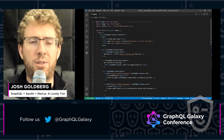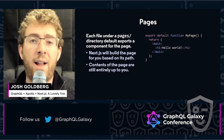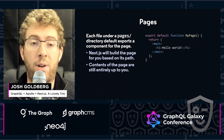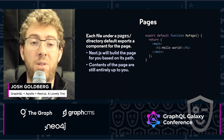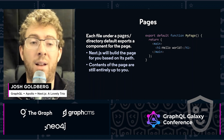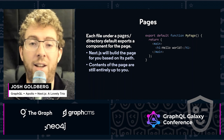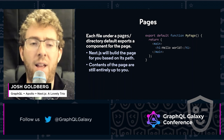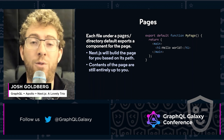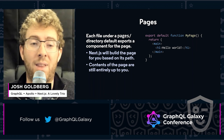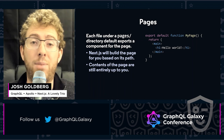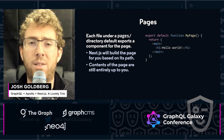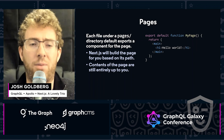Pages slash index. Every file under the pages directory, which can be in your root or under source, default exports a component for the page. In the case that we're looking at on the slide here, you don't have to return much, just some JSX. And then Next.js will build the page for you based on that path. The contents of the page are entirely up to you — you can use whatever HTML contents, whatever style you want, so long as it's a React component.